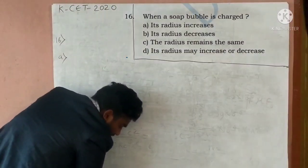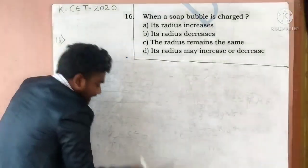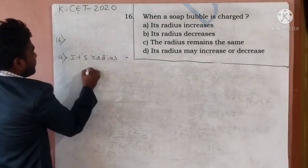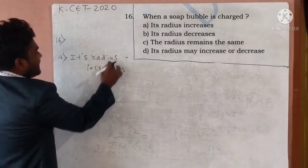Option A is correct. Radius. Its radius increases. Very good. Its radius increases. Sir, why its radius increases?